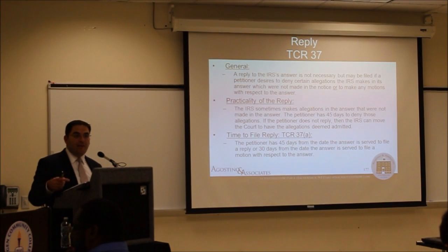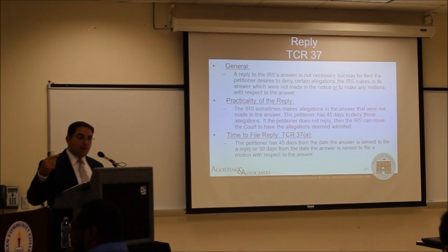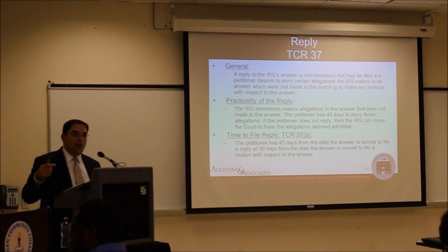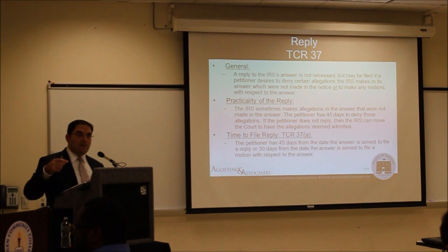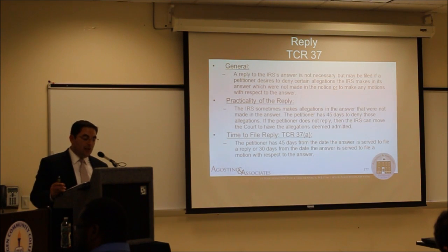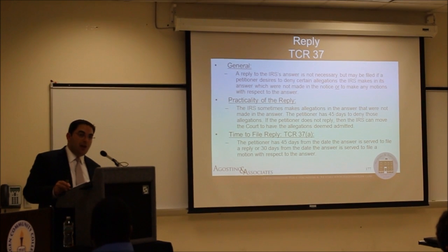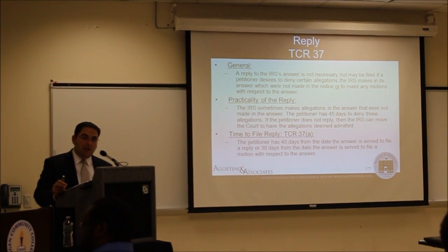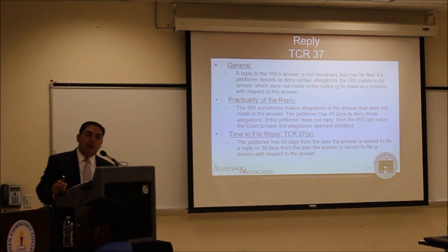A key question you might get is: what is the effect if the IRS makes affirmative allegations in the answer but the taxpayer does not file a reply? The short answer is that those matters will be deemed denied unless the IRS files a motion to have matters alleged in the answer deemed admitted for purposes of the case — known as a Rule 37c motion, filed under Rule 37c of the Tax Court rules.